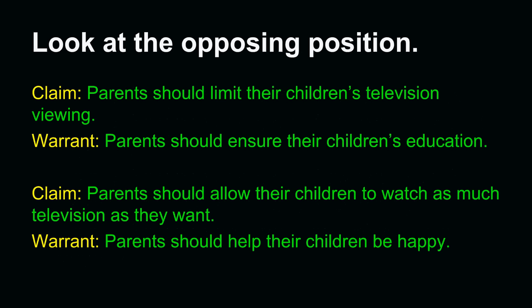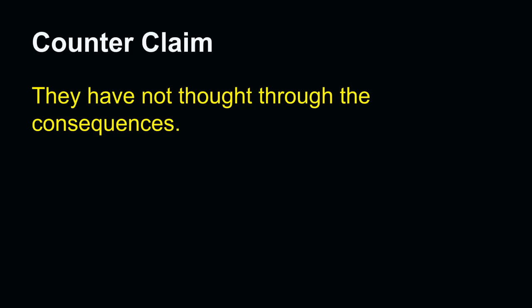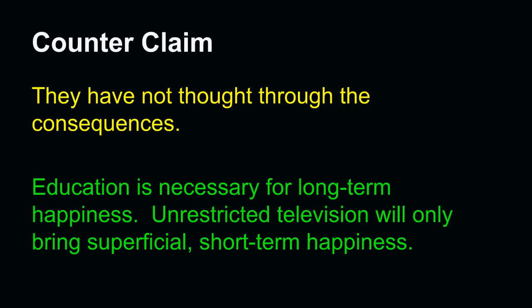Let's see an example. We've looked at this opposing position, and it seems that we have a conflict in warrants: our position wishes to achieve education, and the opponent's position wishes to achieve happiness. We could say that the opponent has not thought through the consequences of their actions, and explain it this way: education is necessary for long-term happiness, while unrestricted television will only bring superficial, short-term happiness — in other words, it will lead to unhappiness. If my opponent thinks their position through, they will see that their action ultimately leads to a lack of happiness, not the achievement of happiness.